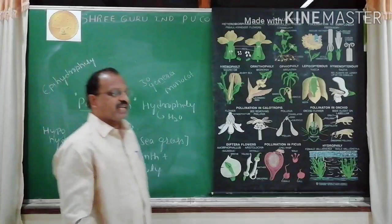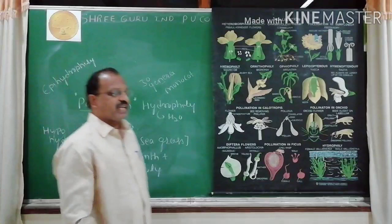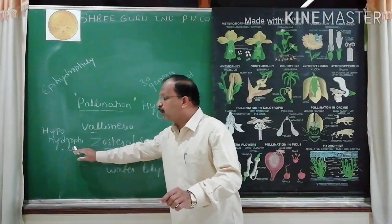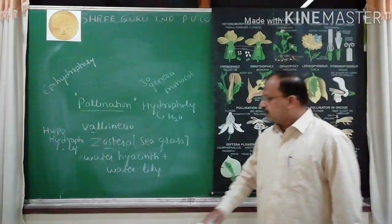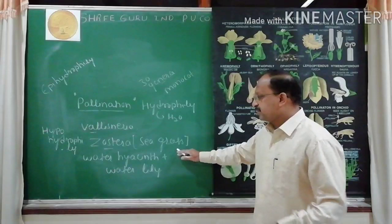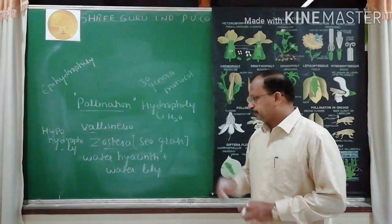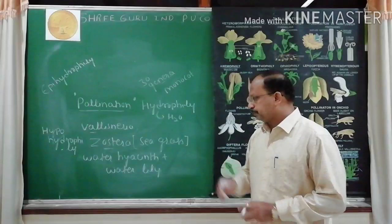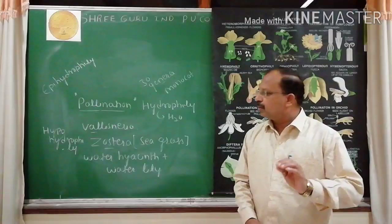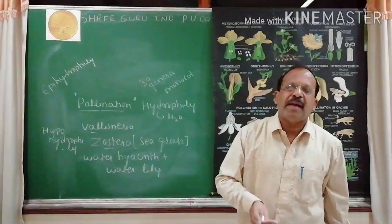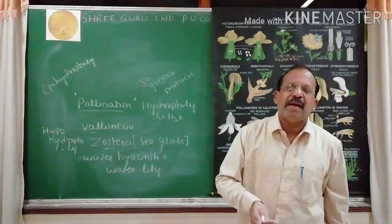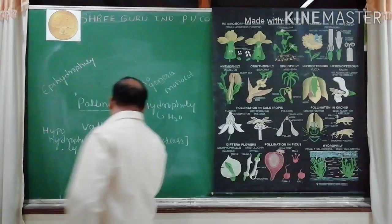Second type is Zostera — commonly called sea grasses, belonging to marine water. An example for fresh water is Hydrilla. In Zostera, pollination takes place under the water — hypohydrophily. The female flower is submerged and pollen grains are carried passively.